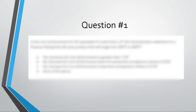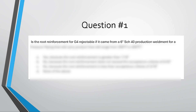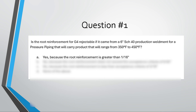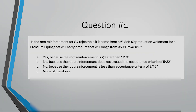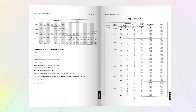Let's do one question together applying this table. Question number one: Is the root reinforcement for G4 rejectable if it came from a 6-inch Schedule 40 production weldment for pressure piping that will carry product ranging from 350 to 450°F? A) Yes, because the root reinforcement is greater than 1/16 inch. B) No, because it does not exceed 5/32 inch. C) No, because it is less than 3/16 inch. D) None of the above.